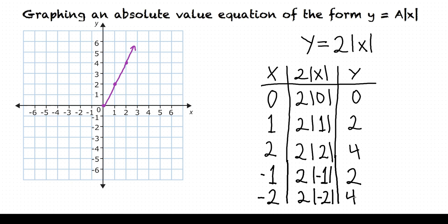Let's plot those points and see what we have now. When x is negative 1, y is 2, and when x is negative 2, y is 4. These points seem to form a different linear equation with a slope of negative 2. So what we found is that this function looks like two regular linear functions that meet up at a vertex, which in this case is at (0, 0). If we know where the vertex is, we can plot the function by first plotting that vertex where the two lines will meet, and then plotting a few points on either side.